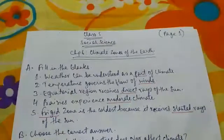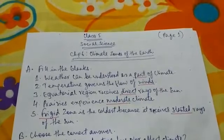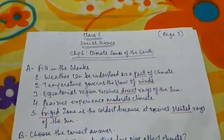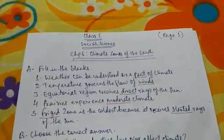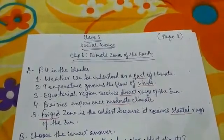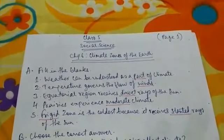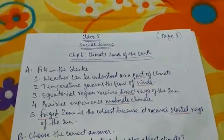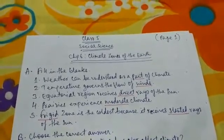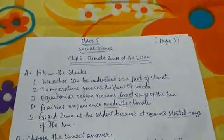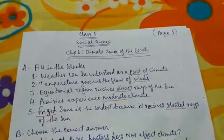Fill in the blanks. Question 1: Weather can be understood as a part of climate. Question 2: Temperature governs the flow of winds. Question 3: Equatorial region receives direct rays of the sun. Question 4: Prairies experience moderate climate. Question 5: Frigid zone is the coldest because it receives slanted rays of the sun.